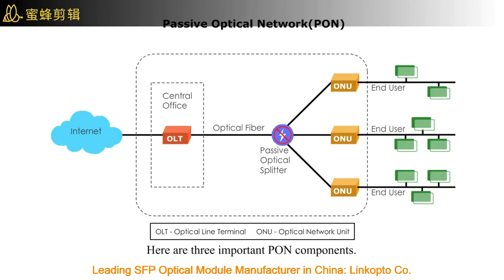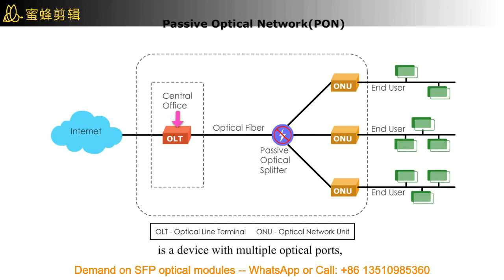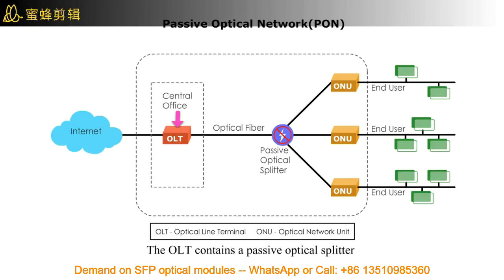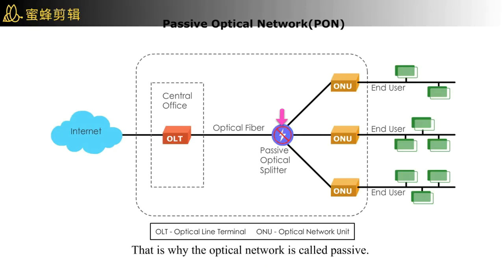Here are three important PON components. The OLT, Optical Line Terminal at the carrier's central office, is a device with multiple optical ports, similar to ports on a router. The OLT contains a passive optical splitter that subdivides each port up to 32 end-users. The optical splitter is a physical device that requires no electricity — that's why the network is called passive.